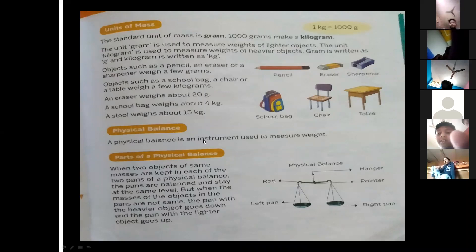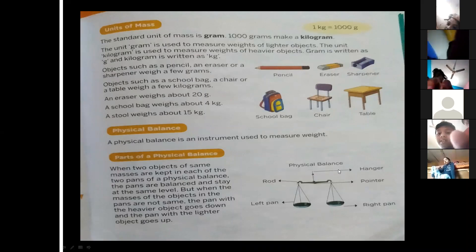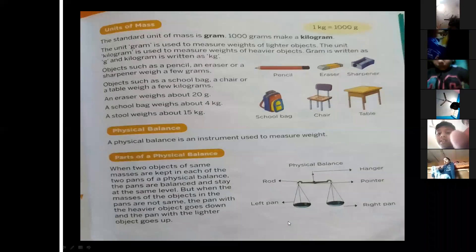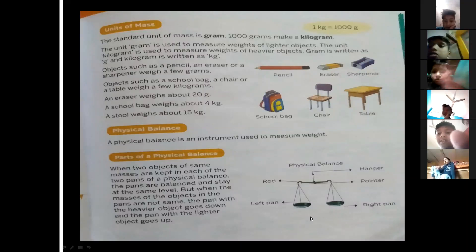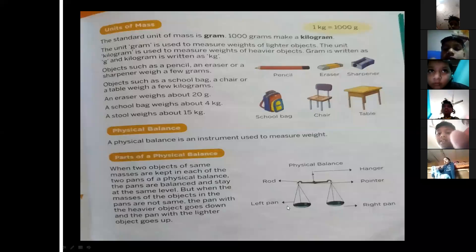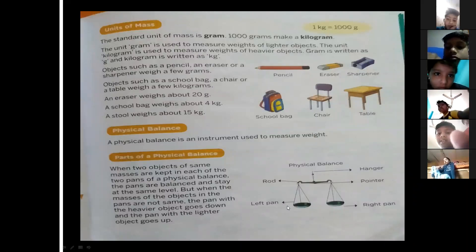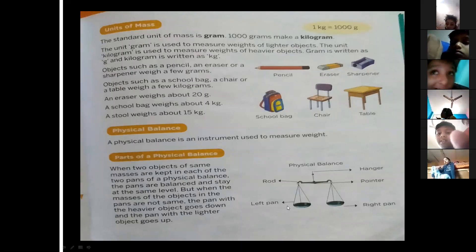A physical balance is an instrument used to measure weight. You will see this at vegetable shops — the shopkeeper uses it. On one side, weights like 1 kg or 500 grams are kept, and on the other side the object — like apples — is placed. When both sides are equal, the apple's weight equals 500 grams.